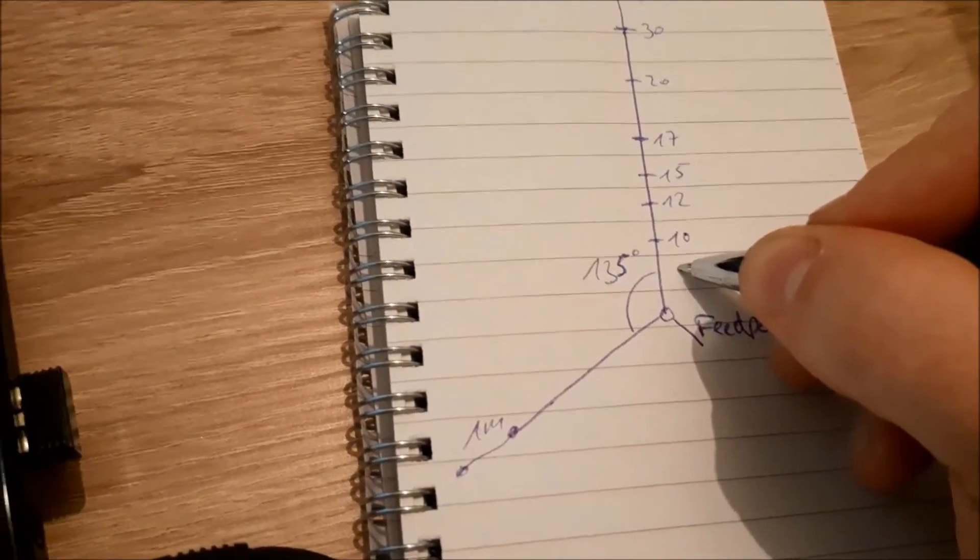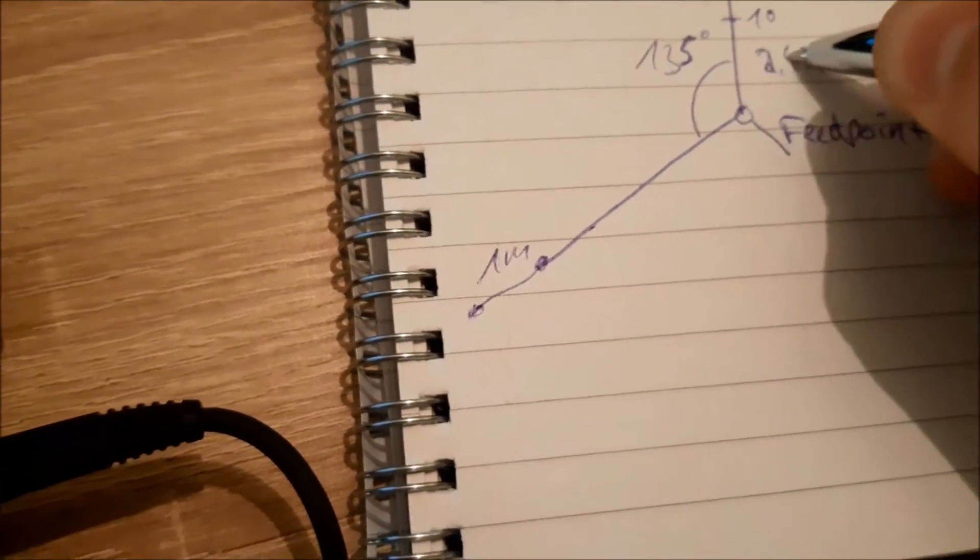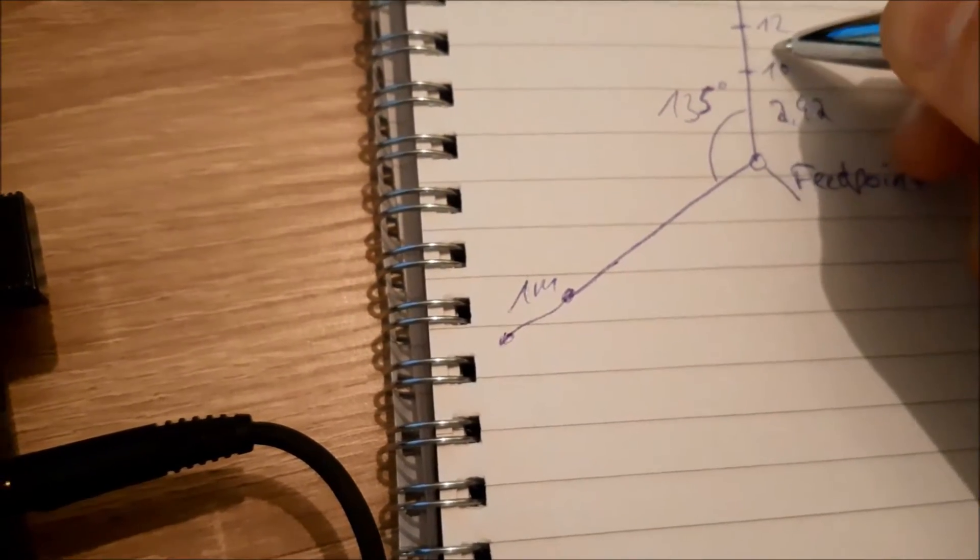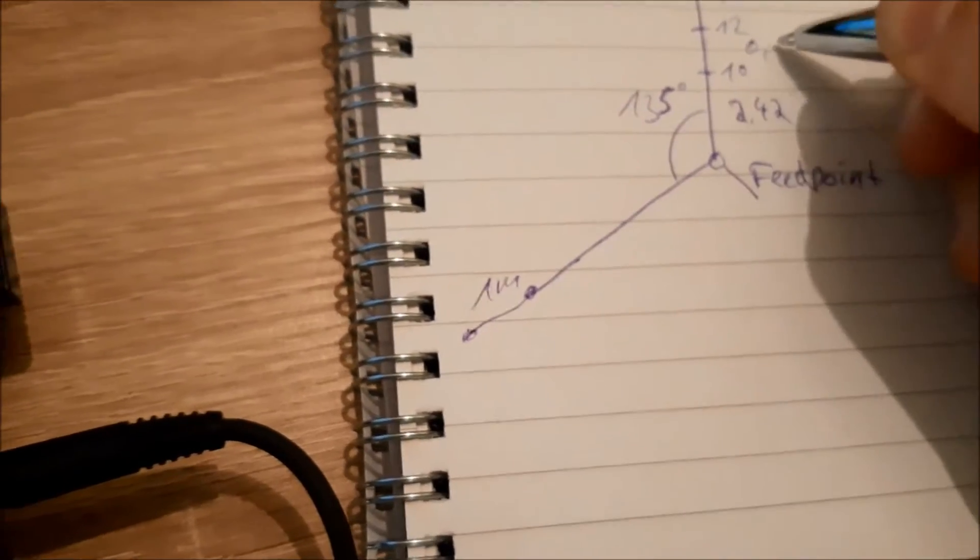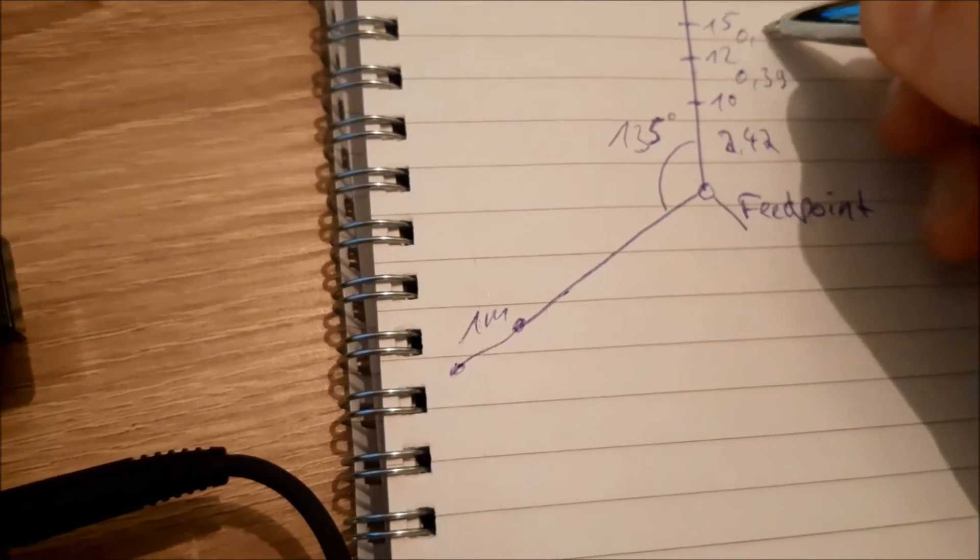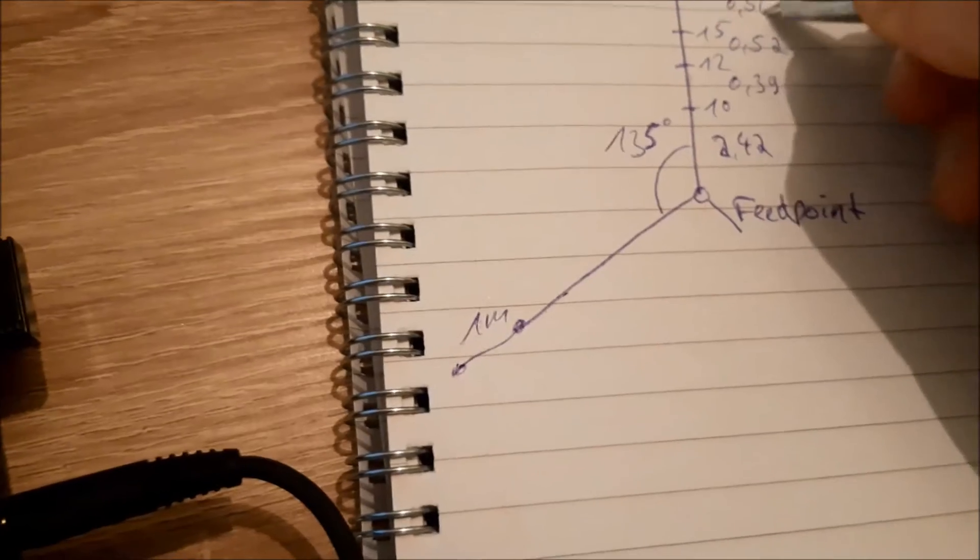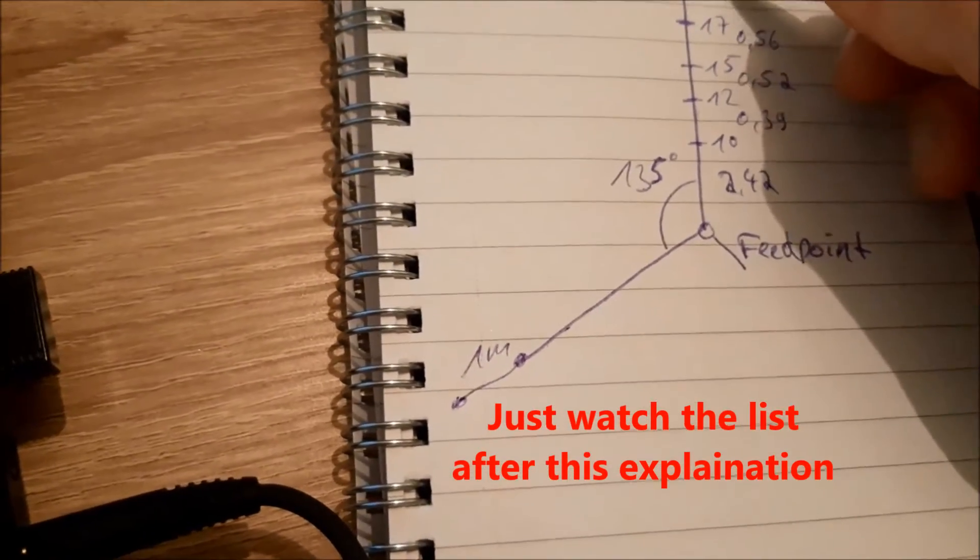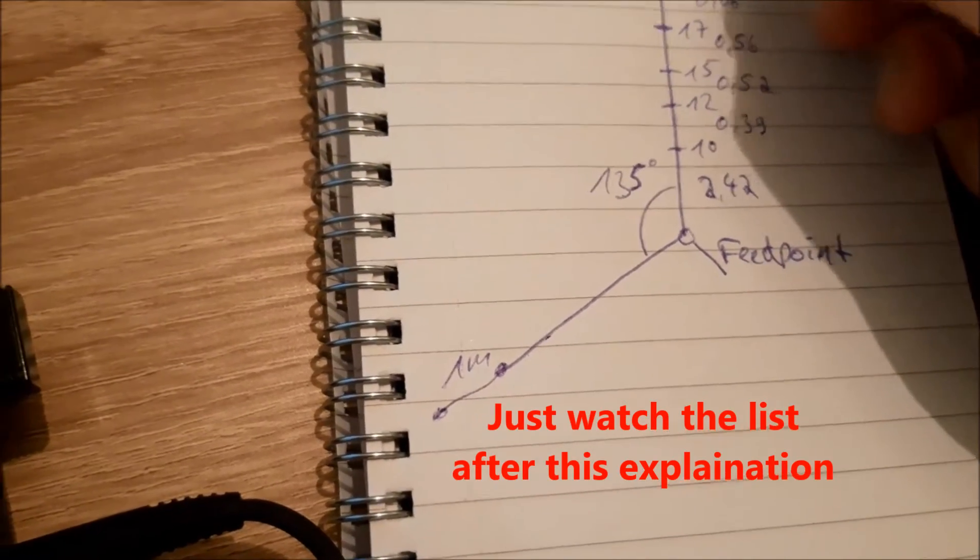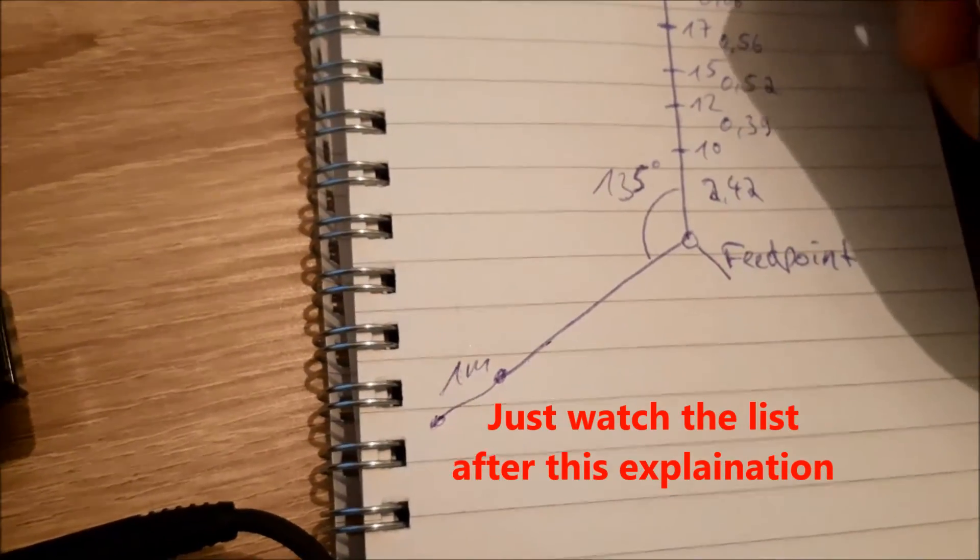Then you have the perfect angle here to reach 50 ohm at your feeding point. Measurements for the wire length is in this case 2.42m for the 10m band. Then at this part here is 0.39m, then 0.52m.